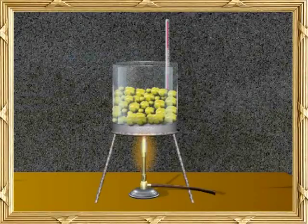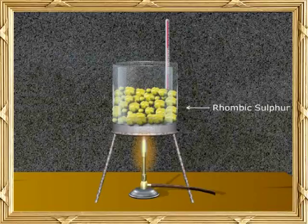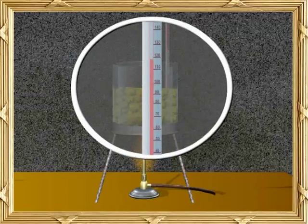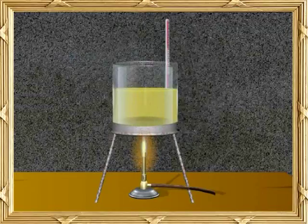Now we will learn how to change one form of sulphur into another. Look at the thermometer. We are going to heat rhombic sulphur. It melts at 119 degrees Celsius and a clear yellow mobile liquid is obtained.